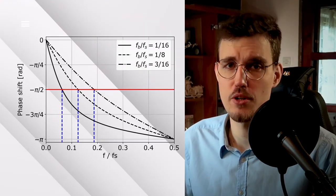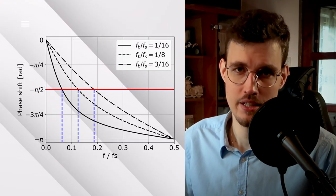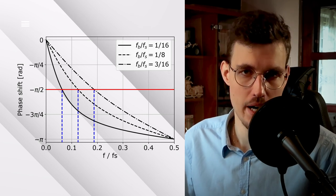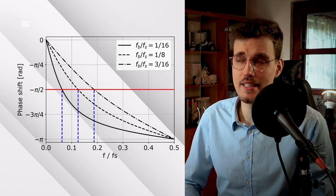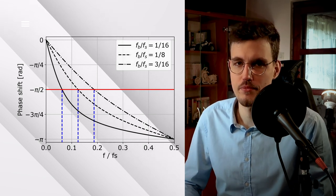Now, at the Nyquist frequency, so half of the sampling rate, the phase shift is exactly minus pi. So the tone corresponding to that frequency is exactly inverted in phase. If we add a signal and its phase inverted version, a phase cancellation will occur. We will obtain an all zero signal, so silence.